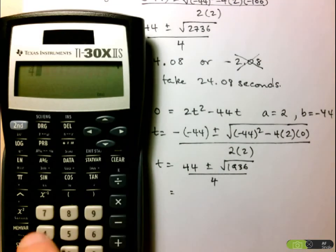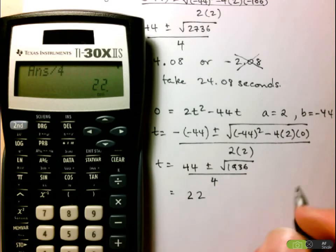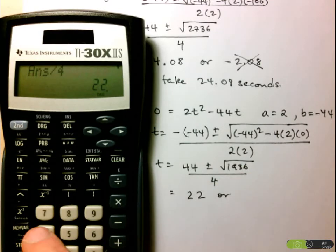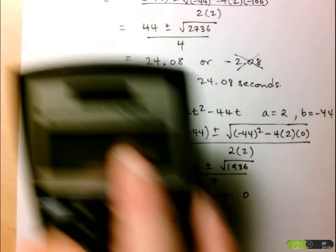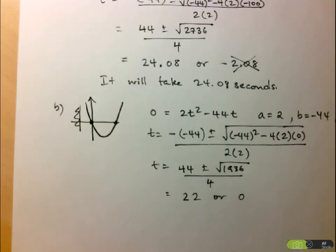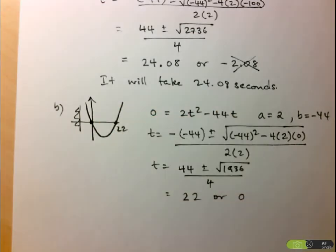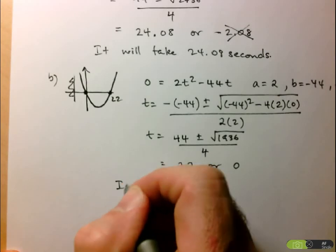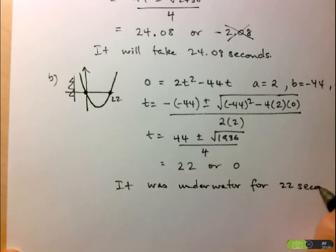So we've got 44 plus or minus square root of 1936, divided by 4. Calculating: 44 plus square root of 1936, divided by 4 — it's a nice number — gives us 22. And the other answer: 44 minus square root of 1936 equals 0, divided by 4, still equals 0. So the two times are t = 0 and t = 22. The bird entered the water at t = 0 and came out at t = 22 seconds. So the bird was underwater for 22 seconds.